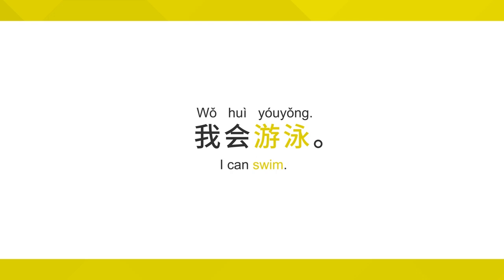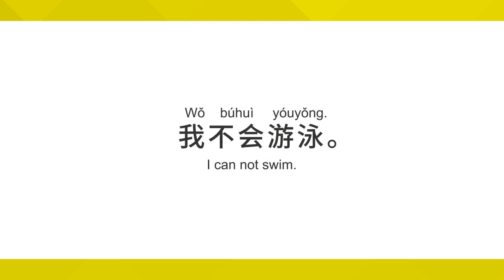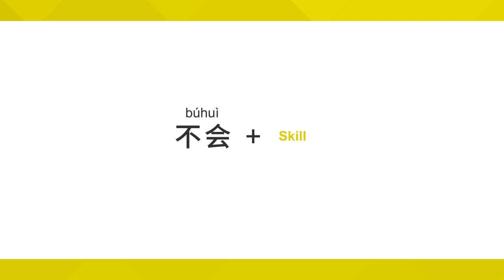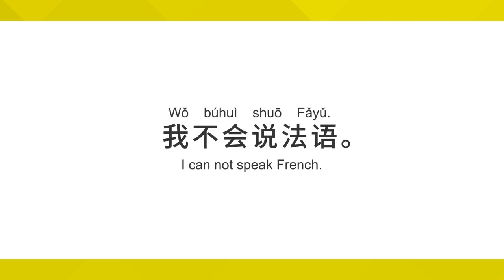What if I want to make it negative? For example, what if I don't know how to swim and I want to say 'I can't swim' or 'I don't know how to swim'? 我不会游泳。 To make this negative, all we need to do is add 不 in front of 会 — 不会 plus the skill. For example, 'I don't know how to' or 'I can't speak French' — 我不会说法语。